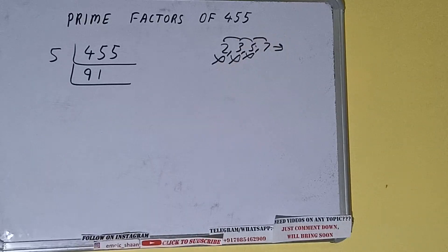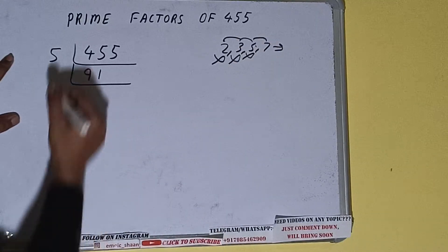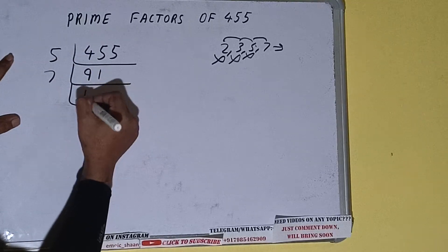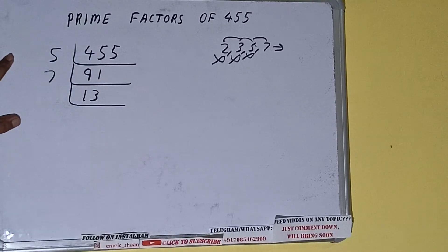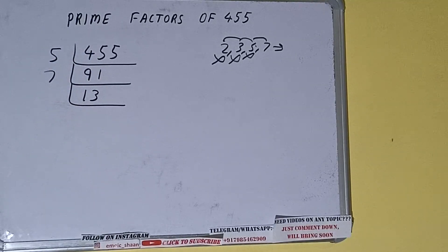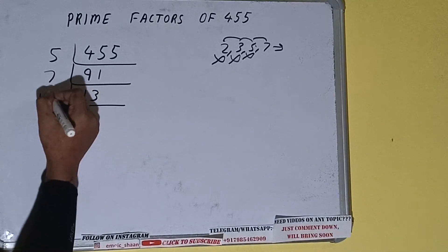With 7, it is divisible. So we divide: 7×13=91. Now, is 13 divisible by 7? No — because 13 is itself a prime number, so 13 is divisible by itself only.